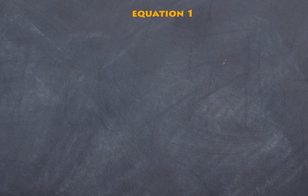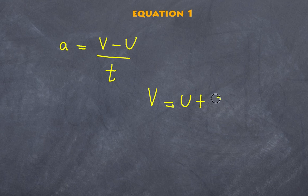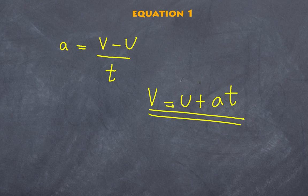Let's now look at the equations of motion, starting with equation number one. This is often the easiest to know because it starts with the idea of determining acceleration. Acceleration is the rate of change of velocity — so final velocity minus initial velocity, divided by time. If I rearrange this equation, I get V = U + AT. That is my first equation of motion. Notice it has four variables, so I need to know three of them to determine the fourth.